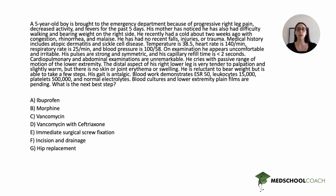Blood work demonstrates an ESR of 50, leukocytes of 15,000, platelets of 500,000, and normal electrolytes. Blood cultures and lower extremity plain films are pending. What is the next best step?